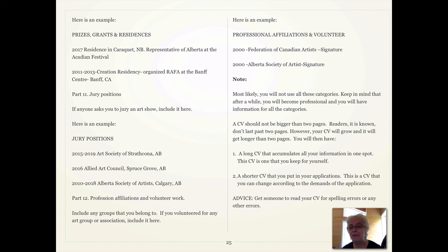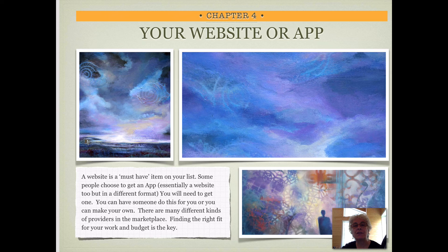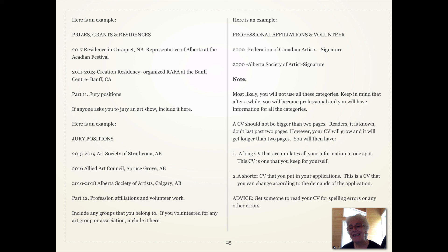Here's some advice: get someone to read your CV for spelling errors or any other errors. That's it for this section. Take your time, write this out, and follow the same steps as you did in part one and part two. Make sure somebody proofreads for spelling and grammatical errors. This will take time — take the time you need to do a good job, and then we'll see you in the next section.